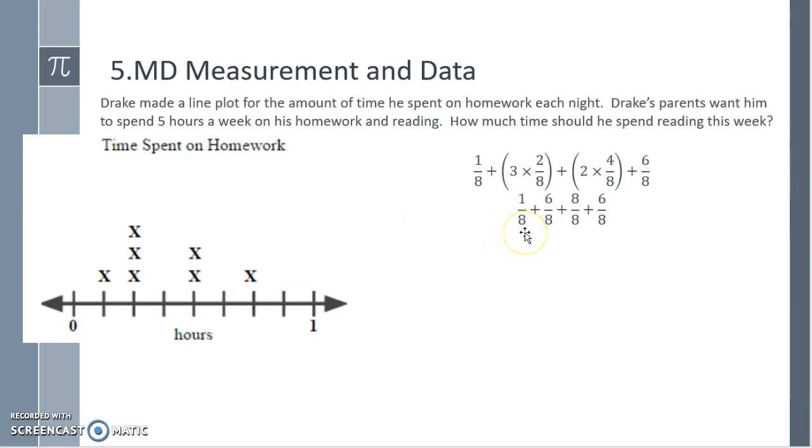So when I multiply, I'll have one eighth plus three times two eighths is six eighths, two times four eighths is eight eighths plus six eighths. Altogether we have 21 eighths, which is two wholes and five eighths left over. He's supposed to spend five hours a week on homework and reading, so two and five eighths hours is spent on reading. That means we need three eighths more of an hour to reach three hours, plus two more hours to reach five total hours. So Drake will need to read for two and three eighths hours to reach his five hour goal.